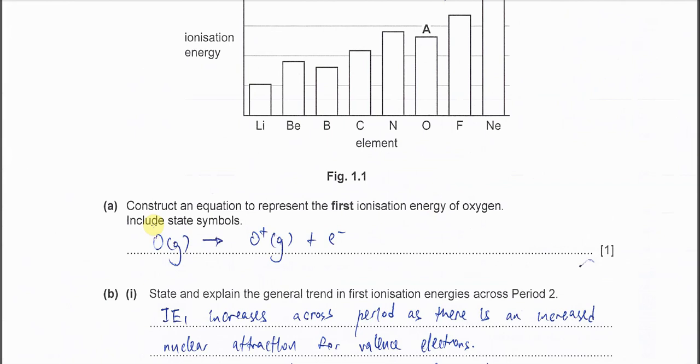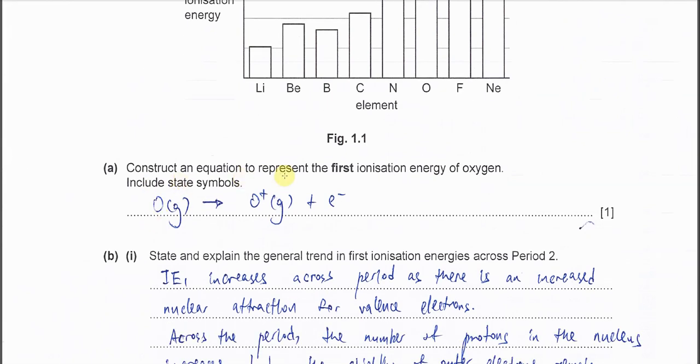Part A. Construct an equation to represent the first ionization energy of oxygen. So this one you must start with gaseous atom. Make sure you include the state symbol.